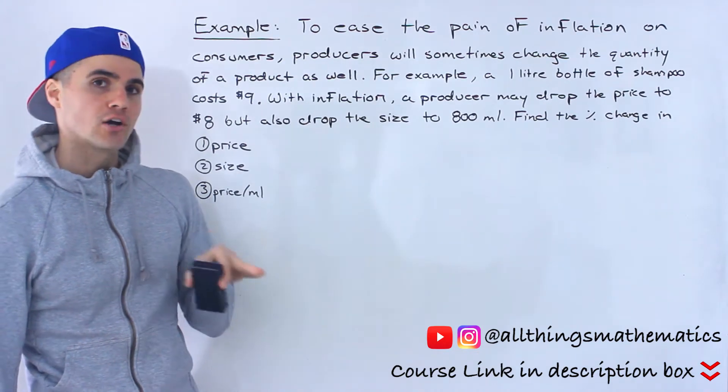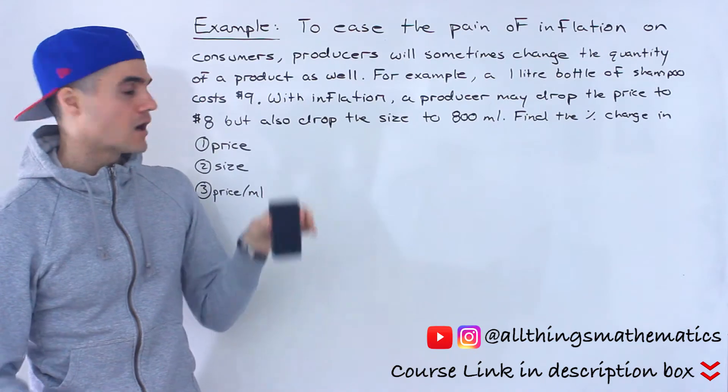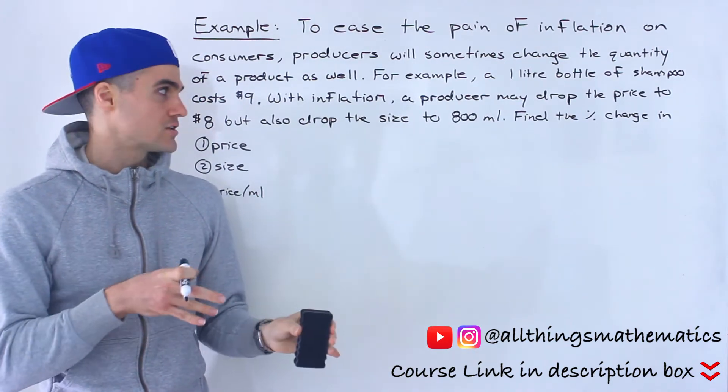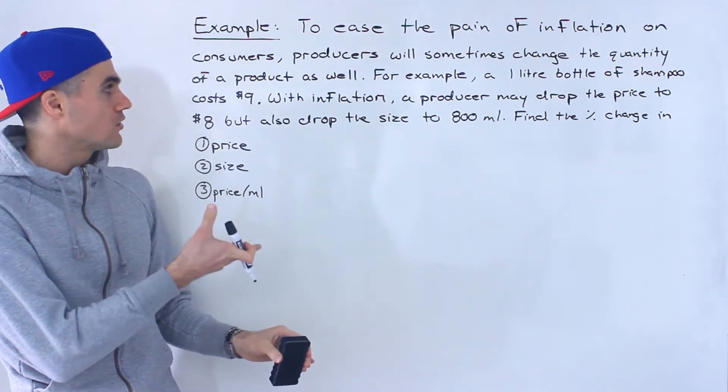To ease the pain of inflation on consumers, producers will sometimes change the quantity of a product as well, in addition to the price. So for example, let's say that a one liter bottle of shampoo costs $9 initially.